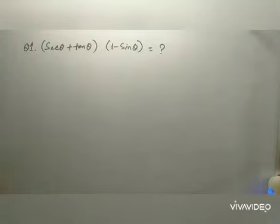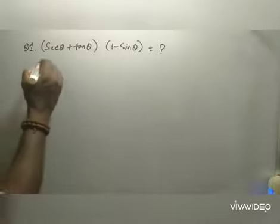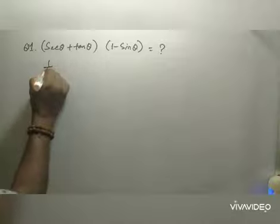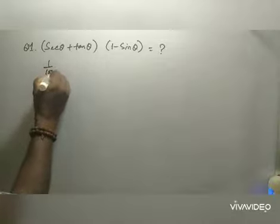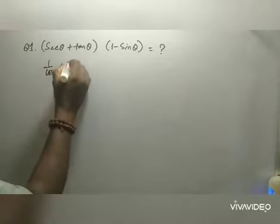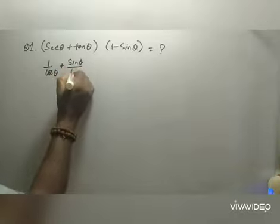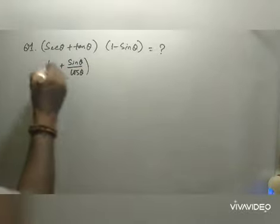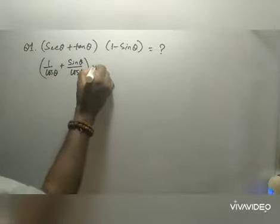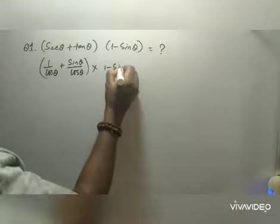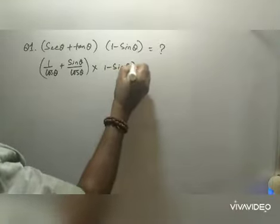Simplify (sec θ + tan θ)(1 - sin θ). This equals (1/cos θ + sin θ/cos θ) multiplied by (1 - sin θ).